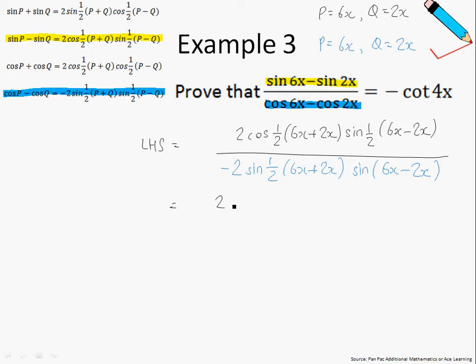So in the numerator, we have 2 cosine. So half times 6x plus 2x is just 4x, and the sine of half times 6x minus 2x is just sine of 2x. And in the denominator, we have negative 2, sine of 4x, sine of 2x.